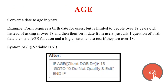The first function is AGE, which converts a date to an age in years that you can then use to test as a condition. The syntax is: AGE, all in caps, parentheses, brackets around your variable, close brackets, close parentheses.